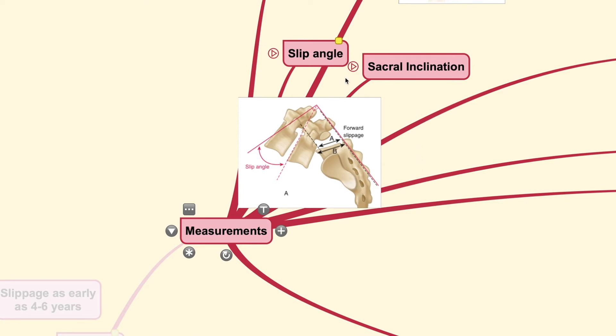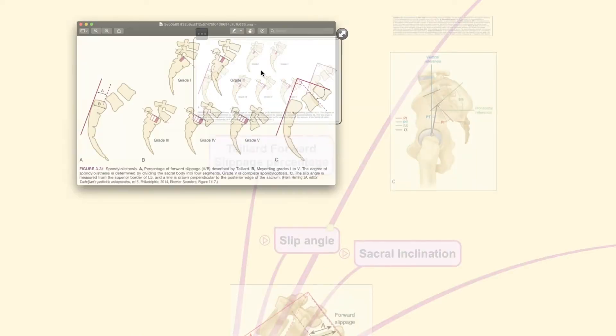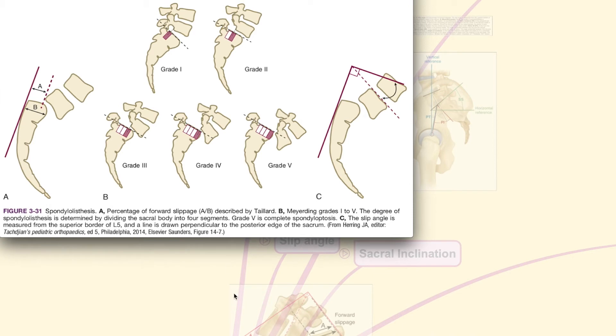Now, the forward slippage percentage as mentioned by Taylor, it is measured by determining the posterior aspect of the S1 and also the degree of the percentage measured from this reference line to the posterior aspect of the vertebral body, otherwise noted as A. A divided by B gives us the percentage of the forward slippage. And the scheme here from picture B from grade 1 to grade 5 are those mentioned by Meierding earlier.